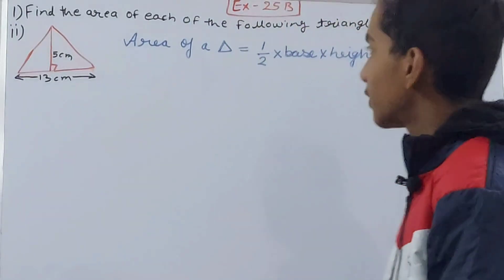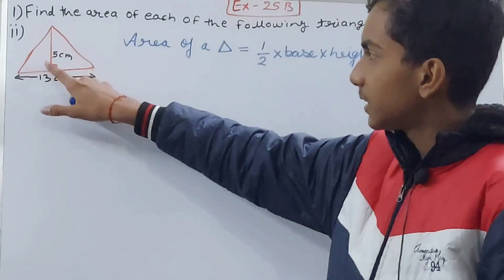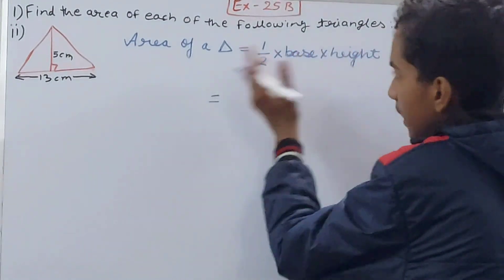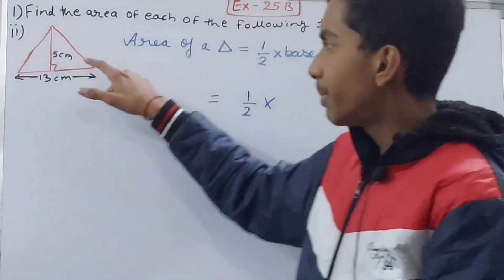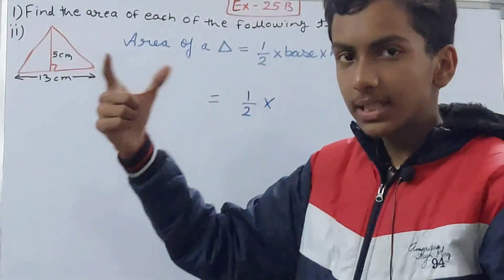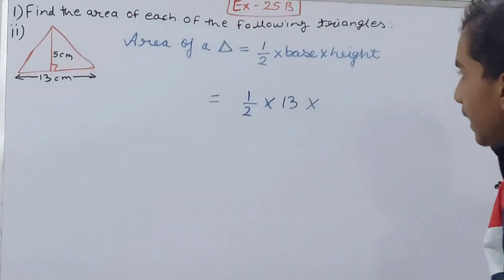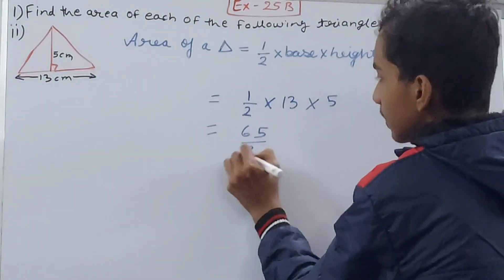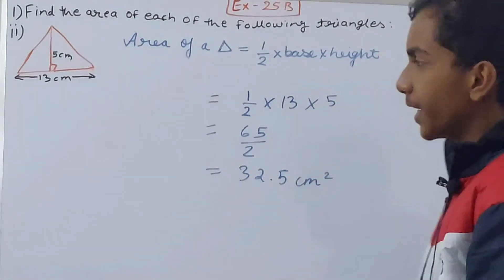Moving to the next part: here we have a complete triangle where the perpendicular distance is 5 cm, so height = 5 cm. Area = 1/2 × base × height. The perpendicular is landing on the side of 13 cm, so base = 13 cm. Area = 1/2 × 13 × 5 = 65/2 = 32.5 square centimeters.